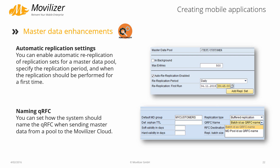In the area of master data, we enhanced the master data sending by an automatic replication setting. You can define a period in which a certain master data pool should be sent out repeatedly. This complements the event based sending of master data. Additionally, the naming of the QRC that processes the master data has been extended — it is now possible to name the QRC after the name of the pool, making it easier to determine the corresponding actions of a master data pool in the QRC transaction SMQ1.